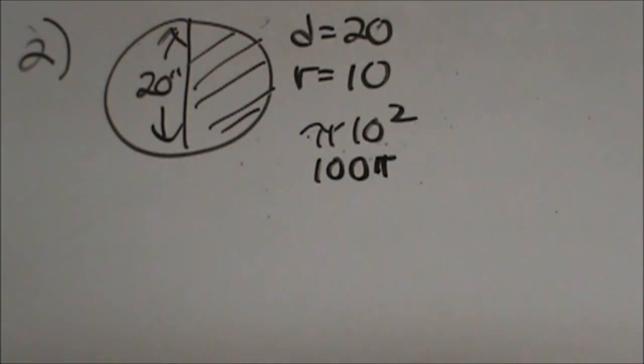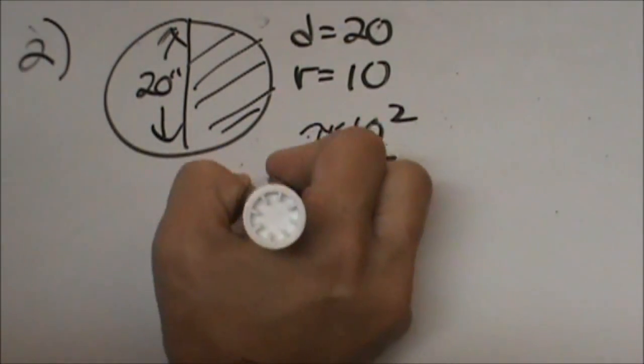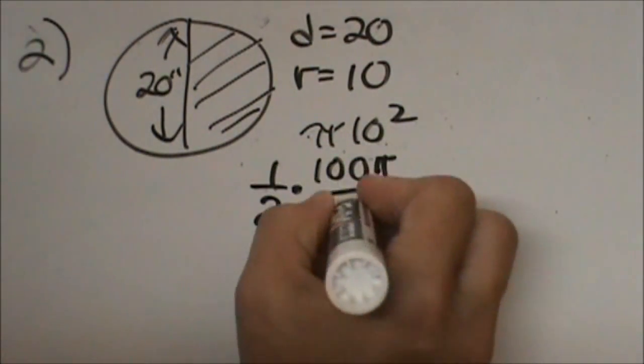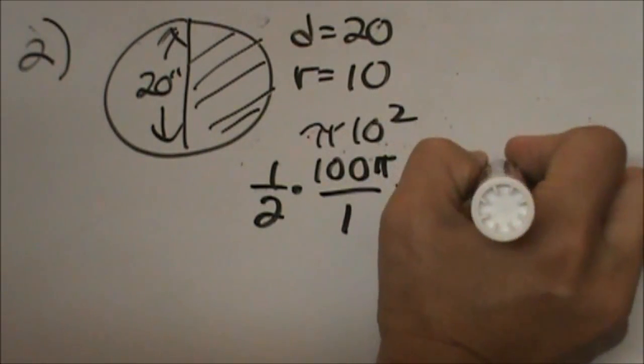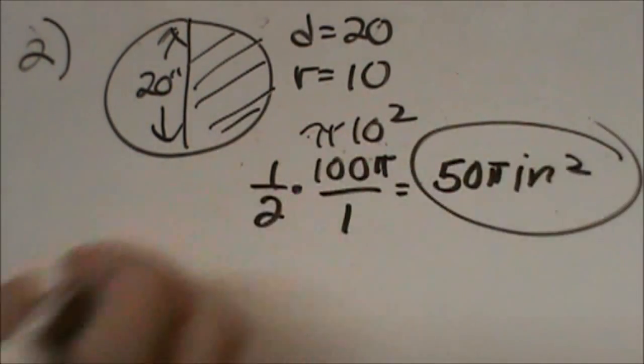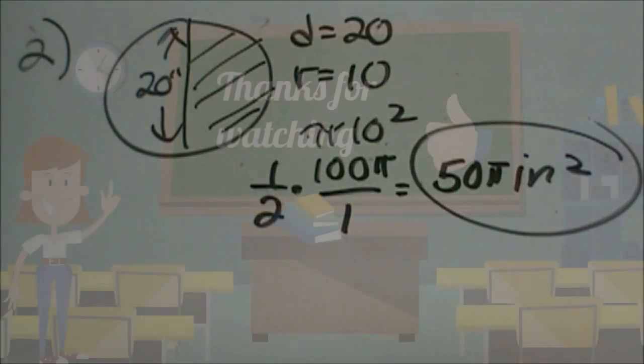But he didn't eat the whole thing, did he? He ate half, so I'm going to multiply that by one half and I get 50 pi inches squared. And that's how much pizza Charlie ate.